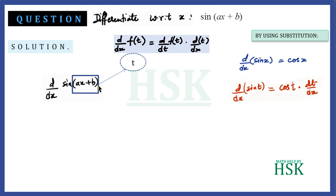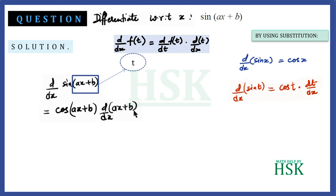So d/dx of sin(ax+b) can be written as cos(ax+b) multiplied by d/dx of (ax+b), because t here is equal to ax+b.